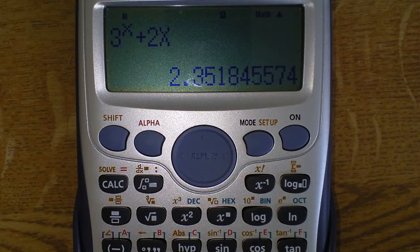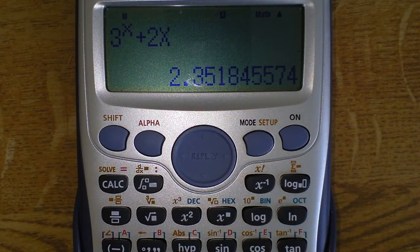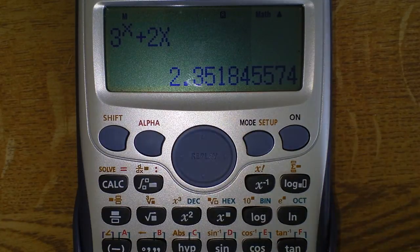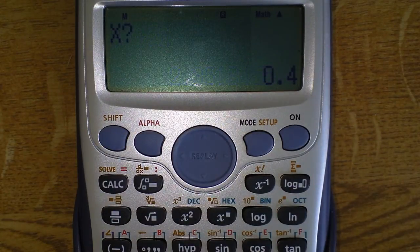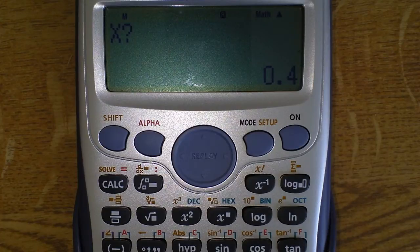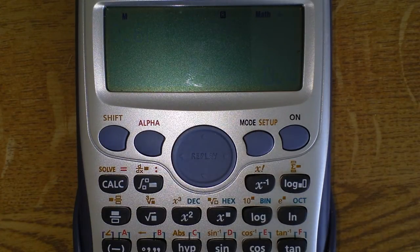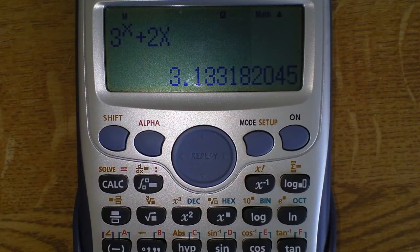So rather than put it all in again and work out the next value, just go calc again. What's your next x value? Next one is 0.6 equals 3.13.